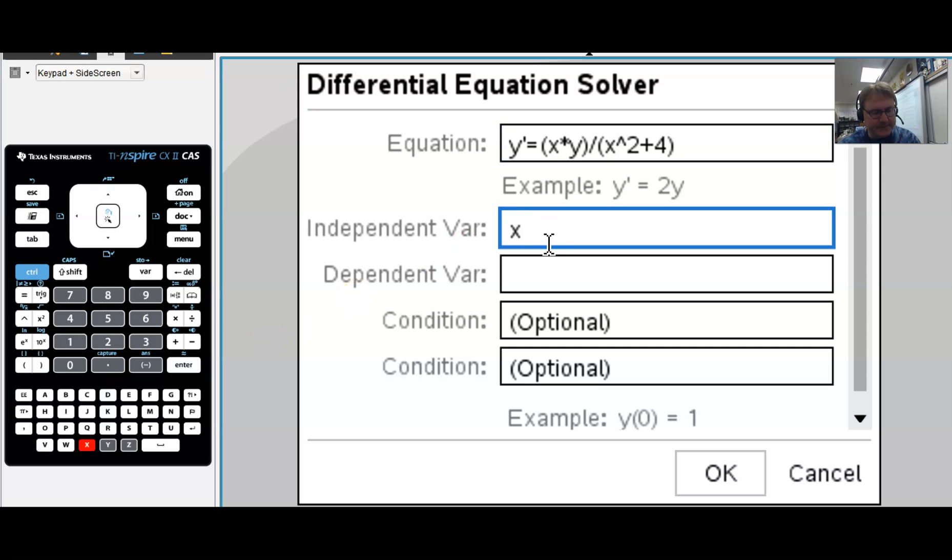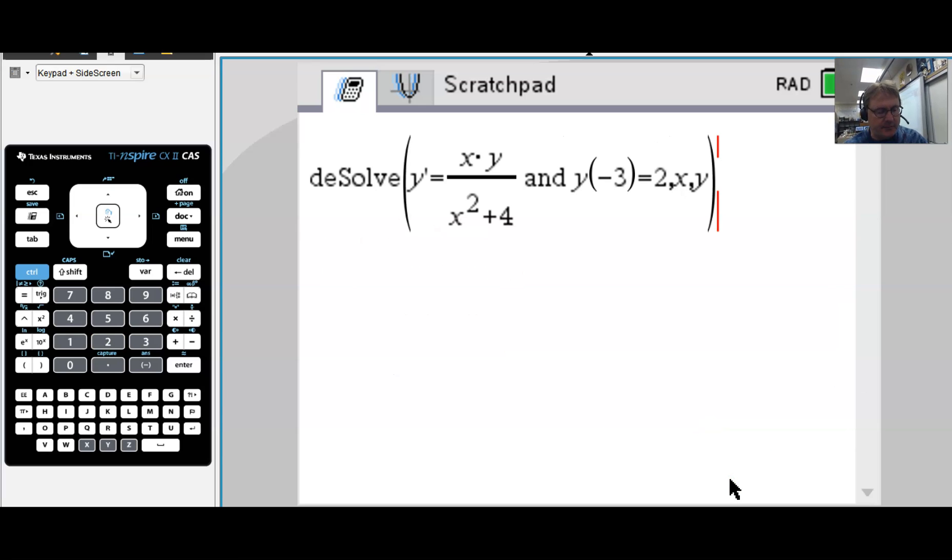Next up, answer a few questions. What is the independent variable? That is typically going to be x in this problem, or t if it's a word problem. The dependent variable is y. And then for the condition, that would be that ordered pair they gave us. Notice there is a special syntax that you must use. y of 0 equal 1. Well, in our particular problem, when x is -3, the y was 2. So you would type y of -3 equals 2. And sometimes you can have more than one condition. We only have the one in this problem. And so you'll hit OK. It'll bring you back to the Scratchpad calculator page, and it basically displays all of that information. If you hit enter, boom, that is our equation.